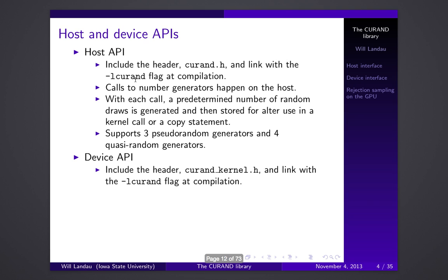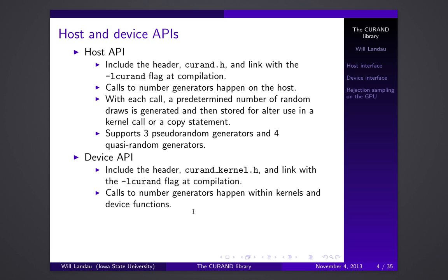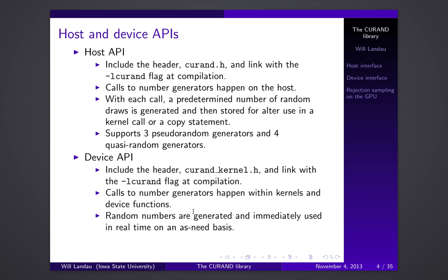The device API, on the other hand, requires a kernel header, and calls to generators happen within kernels and device functions — so you will need to write your own kernels. But you have a library of random number generators you can use inside these kernels to draw random numbers in parallel. It's useful because you can more easily generate random numbers on a need-to-know basis in real time, which is especially helpful in rejection sampling where you may not know how many random numbers you need beforehand.